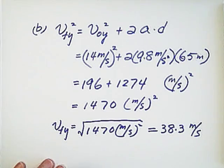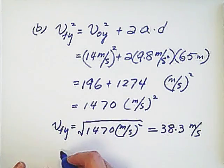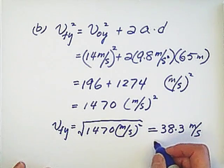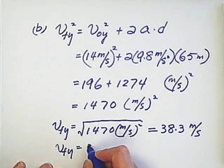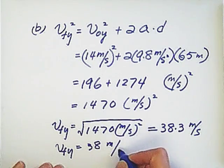So also because two significant digits, we can give the answer v final y equals 38 meter per second.